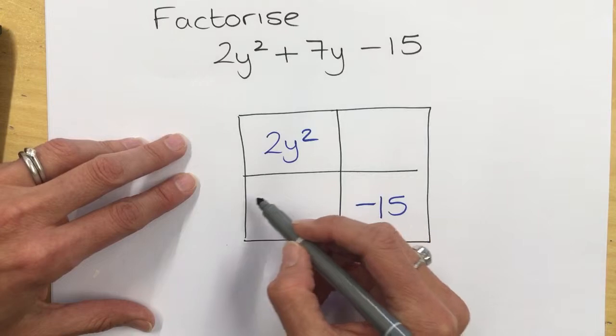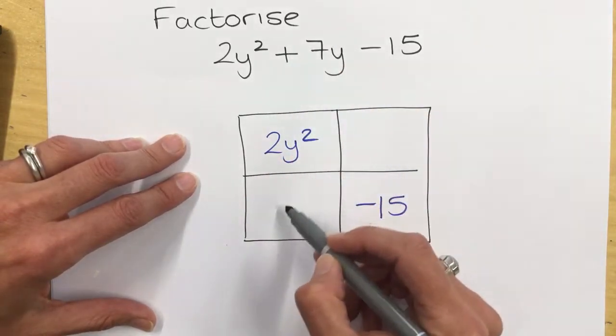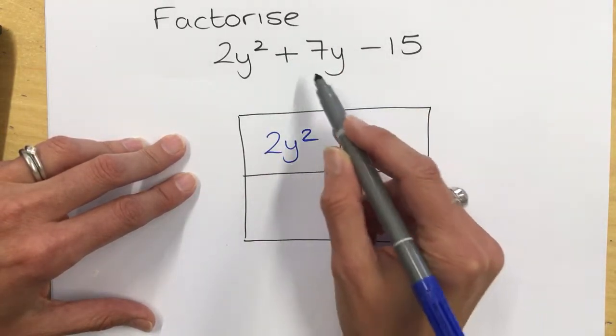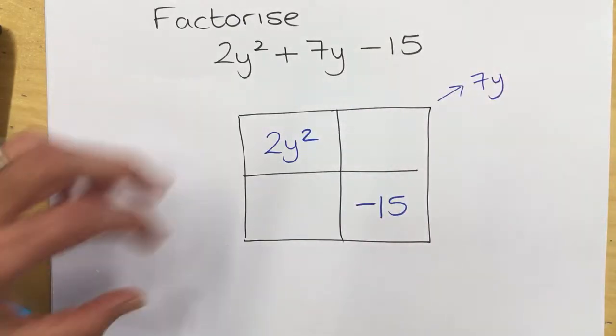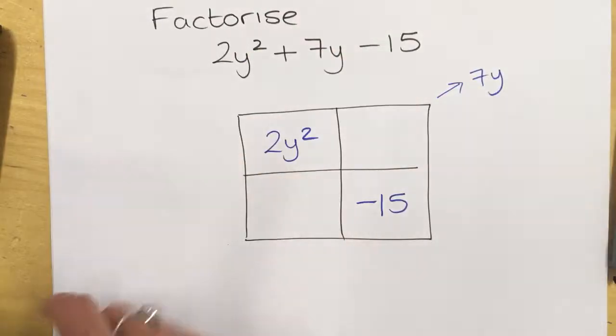And then these two values in these two add together to give you the 7y. So if I just color code that,